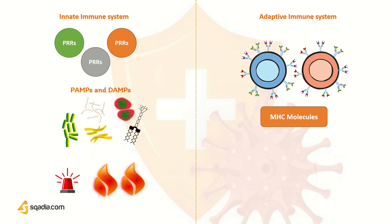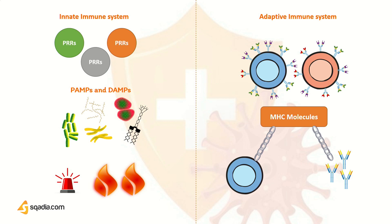Linking the two systems are the families of major histocompatibility complex molecules, abbreviated as MHC. They are specialized for serving up foreign molecules to T lymphocytes. Another set of linking receptors are those by which molecules such as antibody and complement become bound to the cells where they can themselves act as receptors.